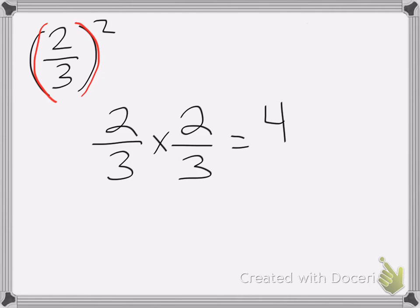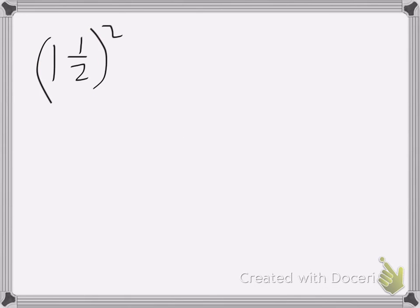Two times two is four. Three times three is nine. So my answer is four ninths. Okay, last one.